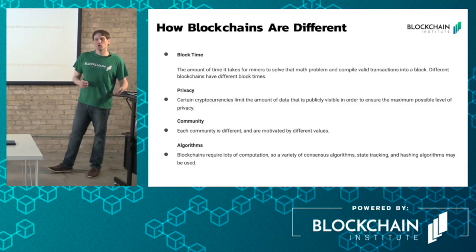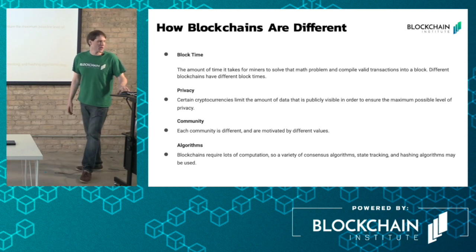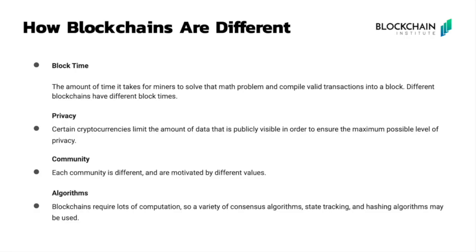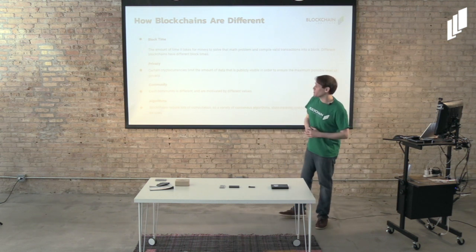If you poke around at the different block explorers and compare blockchains, there are a couple of characteristics that differ from blockchain to blockchain. We already went over block time — the amount of time it takes miners to find a block. Bitcoin is 10 minutes; Ethereum is around 10 to 12 seconds. Privacy is another difference. Those privacy coins are going to obfuscate a lot of the data that a public blockchain, like Bitcoin, keeps public.